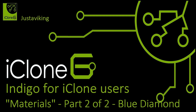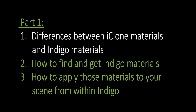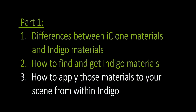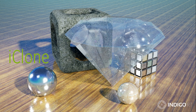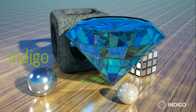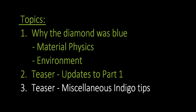Hi, just a Viking here. Welcome to Part 2 of my two-part tutorial on Indigo materials for iClone users. In Part 1 we talked about the differences between iClone and Indigo materials, and then learned how to download Indigo materials and apply them to objects in your scene. The result was much more gem-like, but left us puzzled as to why the diamond was so blue instead of clear. Assuming you've watched Part 1, let's dive into the mystery of the blue diamond.